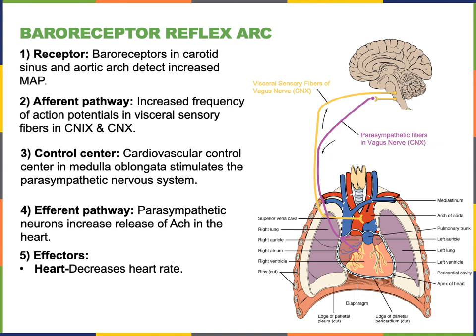In response to increased stretching of the carotid sinus detected by the baroreceptors, an increased frequency of action potentials is relayed in through the afferent pathway found in the glossopharyngeal and vagus nerves. The medulla oblongata control center will then stimulate the parasympathetic efferent pathway, which travels out through the vagus nerve carrying the information down to the heart. The postganglionic parasympathetic fibers will release acetylcholine at the SA node and AV node, leading to a decreased heart rate. Decreasing heart rate then contributes to a decrease in cardiac output, which helps lower the mean arterial pressure and restore the homeostatic set point.